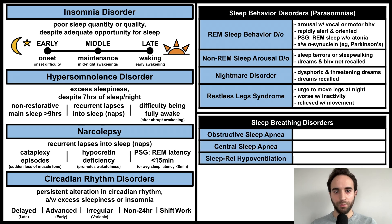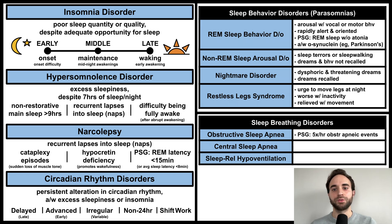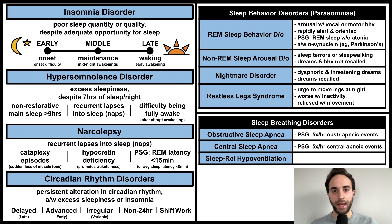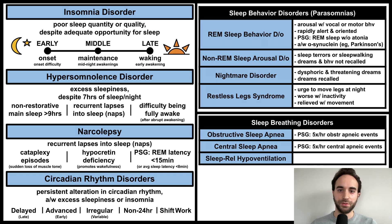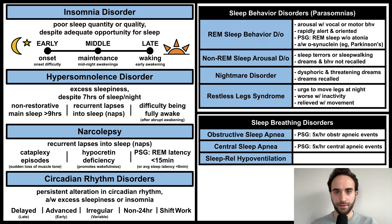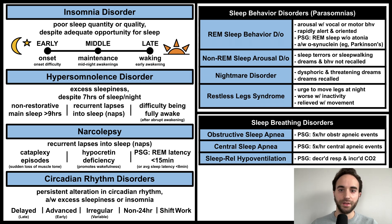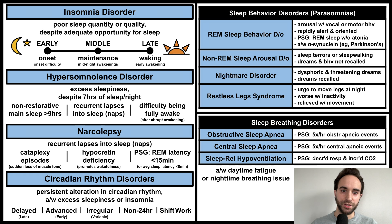Let's conclude with the sleep breathing disorders, which are diagnosed based on sleep study. Obstructive sleep apnea involves a sleep study showing at least five obstructive apneic events per hour. Similarly, central sleep apnea involves at least five central apneic events per hour. In obstructive apneic events, the patient is attempting to breathe but is unable to due to respiratory obstruction, so it is a respiratory tract problem. In central apneic events, the patient does not attempt to breathe, so it is a problem with the stimulation of respiratory drive in the brain. Finally, sleep-related hypoventilation involves decreased frequency of respirations while sleeping, leading to an increase in serum CO2 levels. All of these problems are associated with daytime fatigue or a nighttime breathing issue, such as loud snoring, coughing, or choking during sleep.